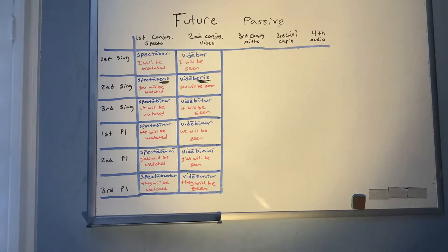Second conjugation future passive with VIDEO: VIDEBOR (I will be seen), VIDEBERIS (you will be seen — E adjusting to prevent -IRIS), VIDEBITUR (it will be seen), VIDEBIMUR (we will be seen), VIDEBIMINI (y'all will be seen), VIDEBUNTUR (they will be seen).